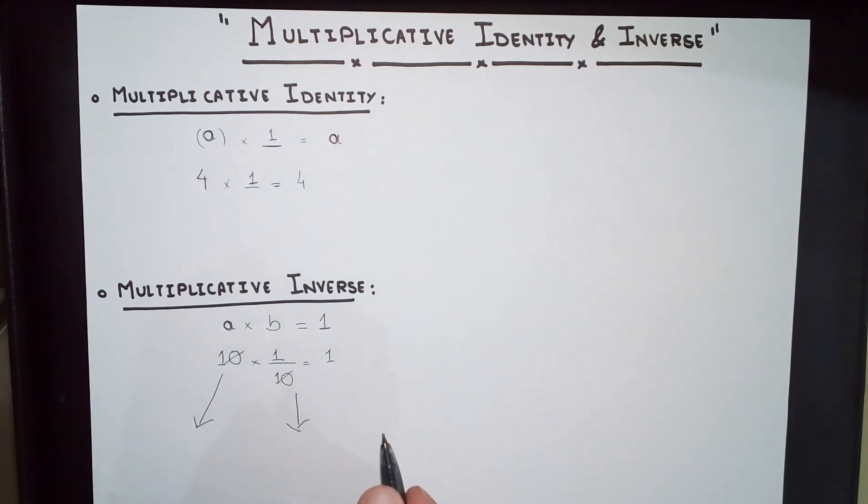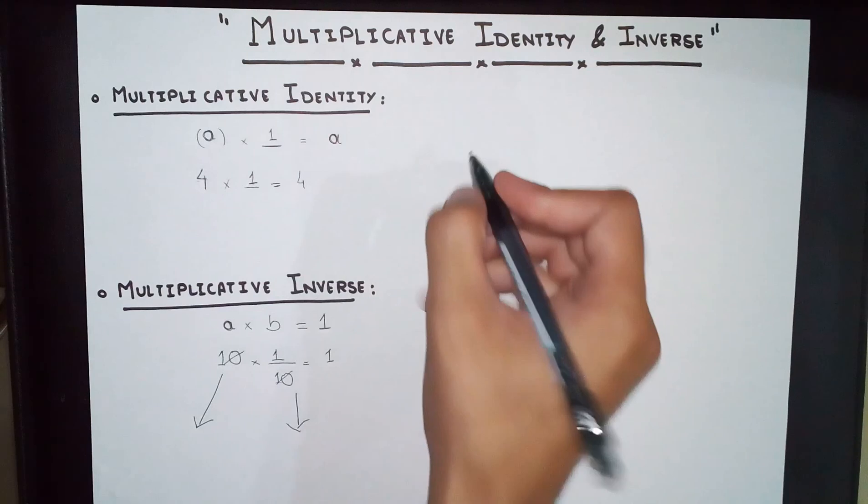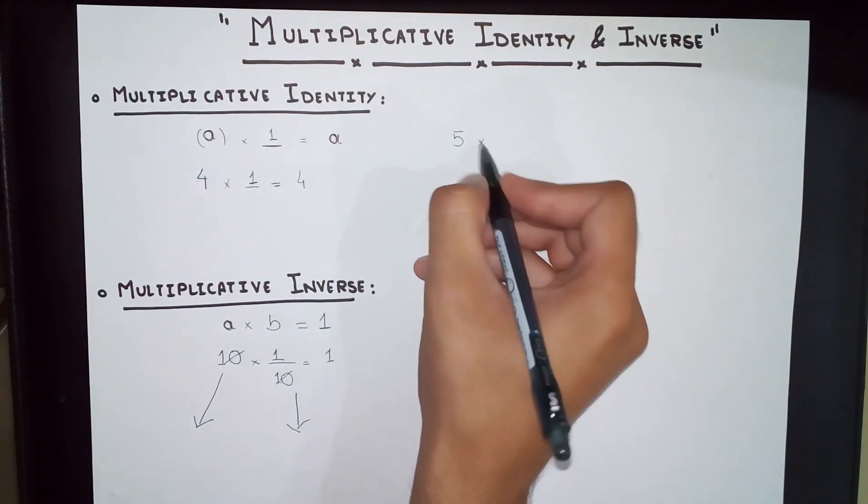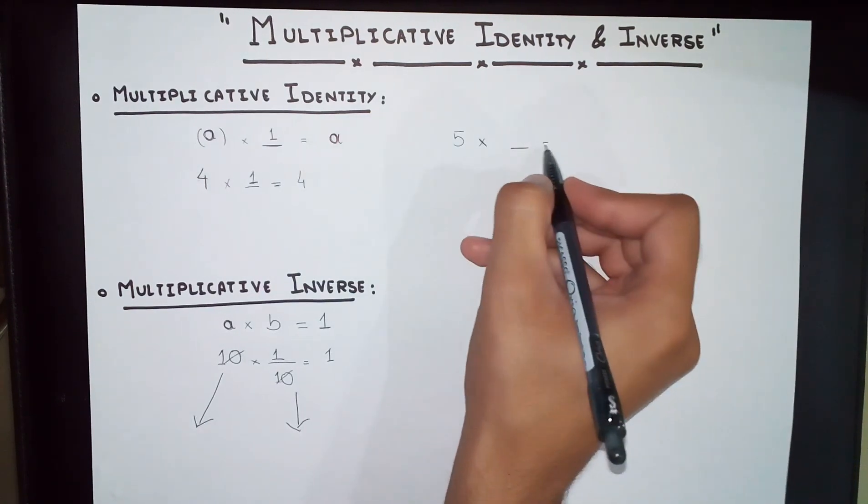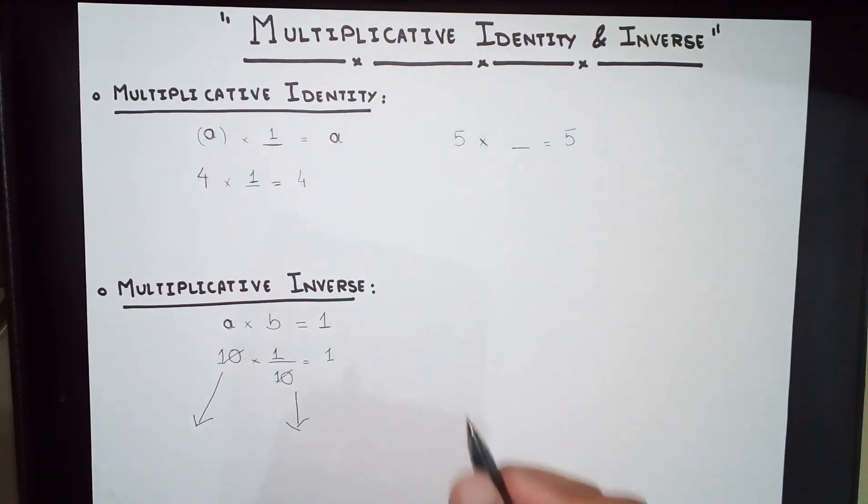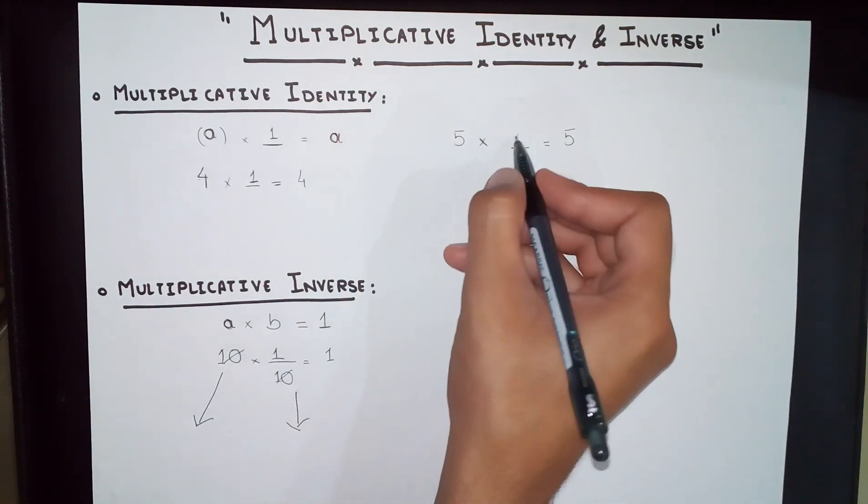Let us do some problems before ending our lecture. Let us say we have the number 5, and we multiply that with some number to get 5 again. What would the answer be? 1.